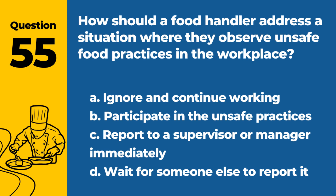Question 55. How should a food handler address a situation where they observe unsafe food practices in the workplace? A. Ignore and continue working. B. Participate in the unsafe practices. C. Report to a supervisor or manager immediately. D. Wait for someone else to report it. Answer: C. Report to a supervisor or manager immediately. If a food handler observes unsafe food practices in the workplace, they should report it to a supervisor or manager immediately for corrective action.